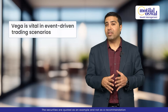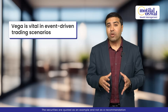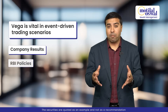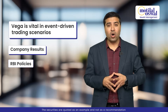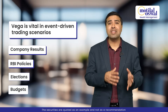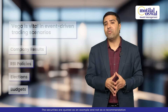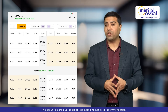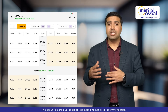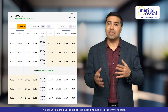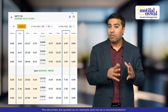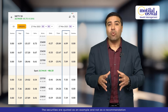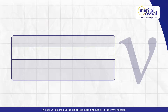Vega plays a crucial role in event-driven trading scenarios like a company's results, RBA policy, or any election outcome where uncertainty spikes ahead of the event. It is also significant in long-dated options, as the more time there is until expiry, the higher the uncertainty, making the option more sensitive to volatile scenarios.